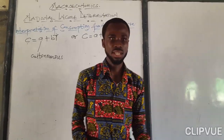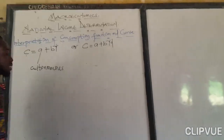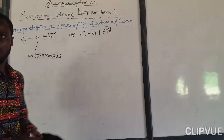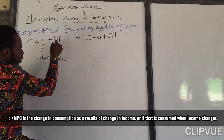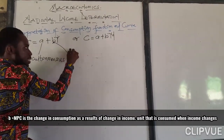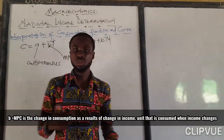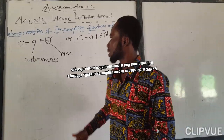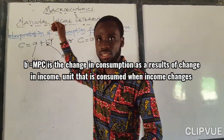In Mathematics we say that this is the C intercept, but in economics we call it Autonomous Consumption. Now the B is for Marginal Propensity to Consume. The Marginal Propensity to Consume is the change that occurs in consumption when income changes.